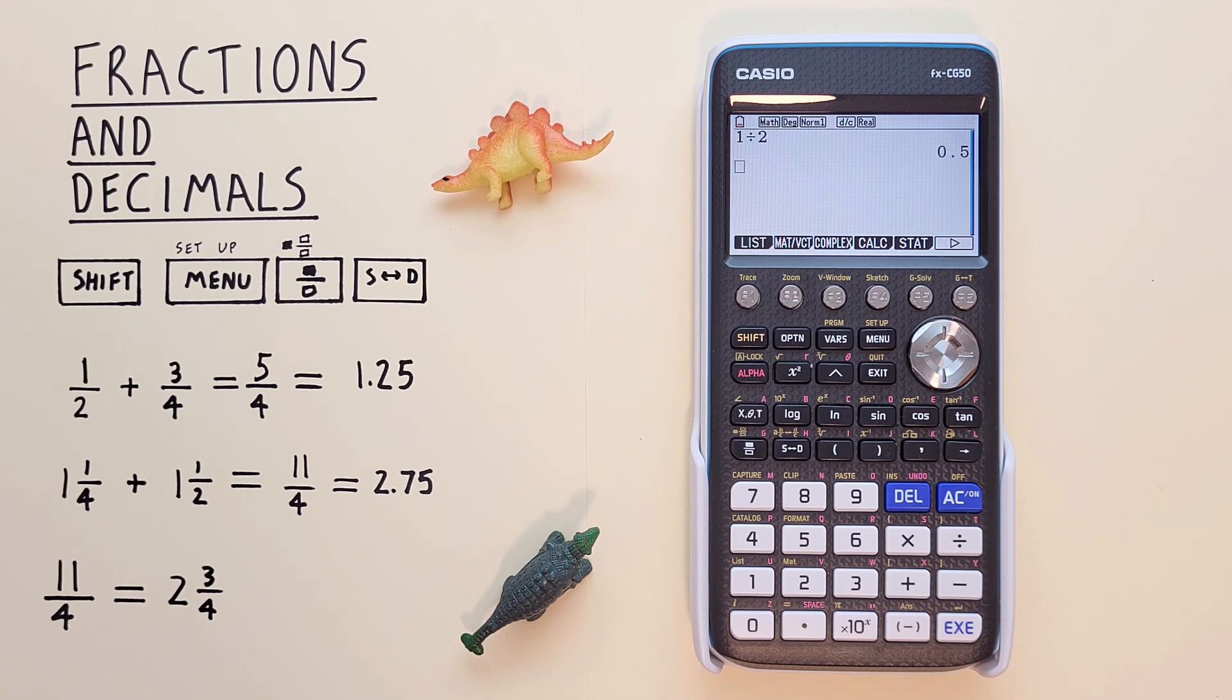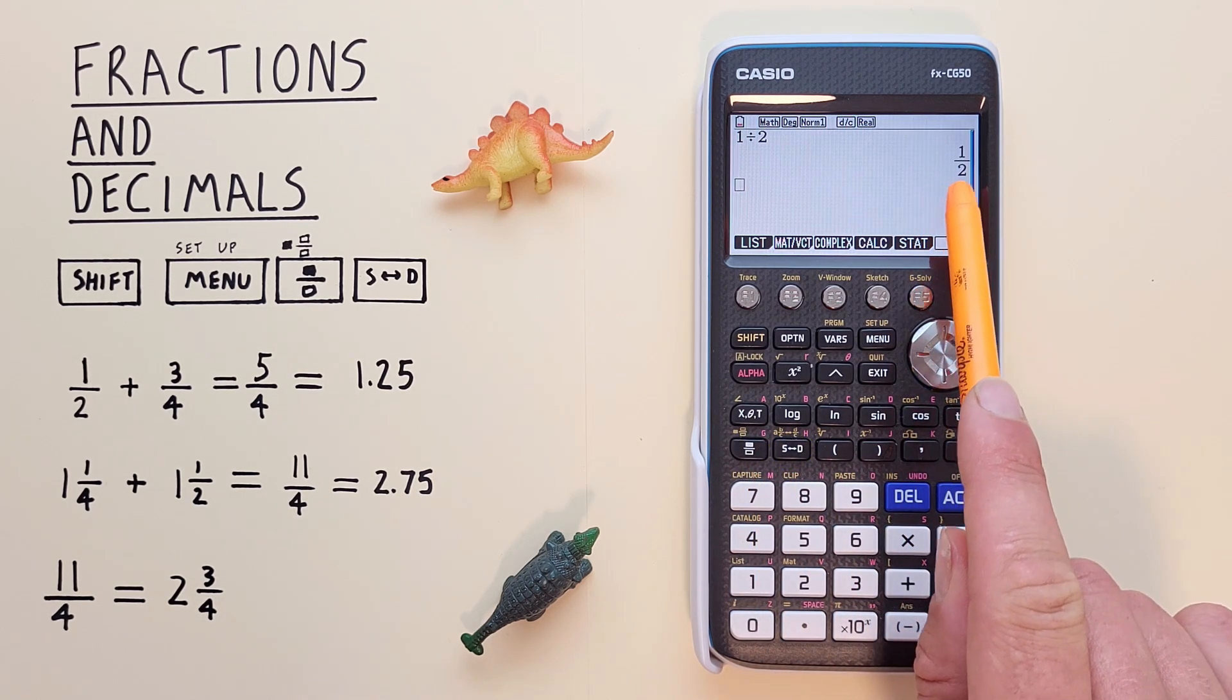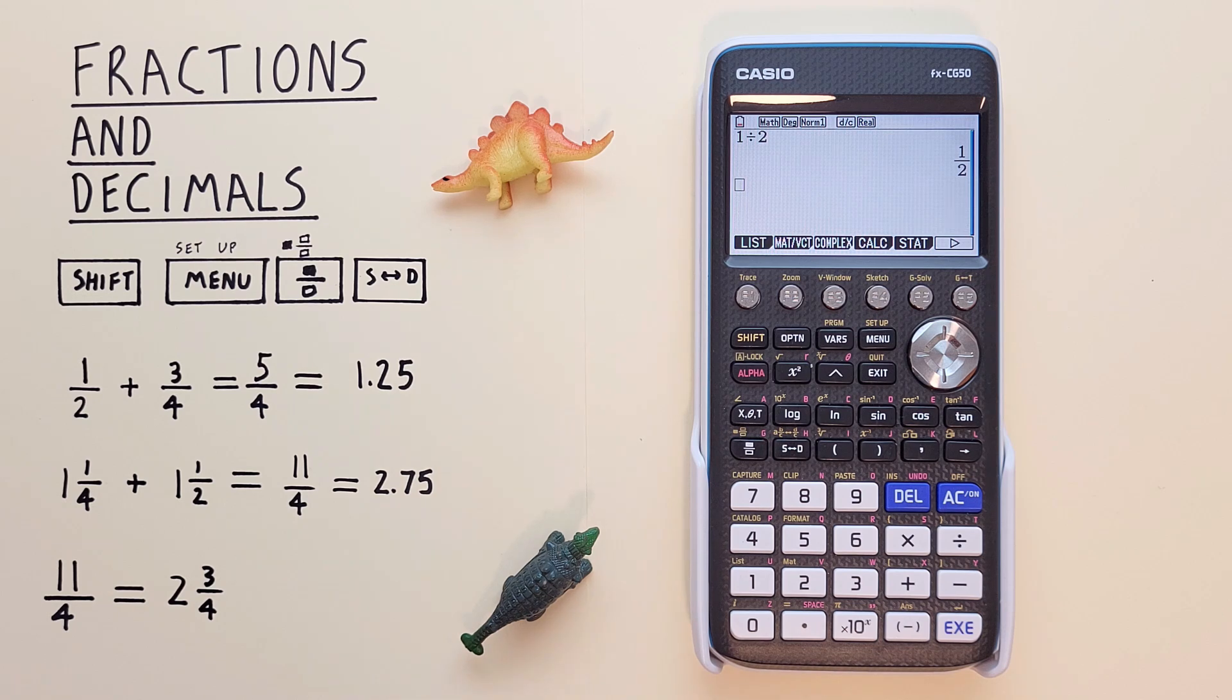What if we wanted that as a fraction? To do that, we can press the STD or conversion key. So we press that, and our 0.5 has been converted to 1 over 2, or a fraction. We can press it again to go back to the decimal.